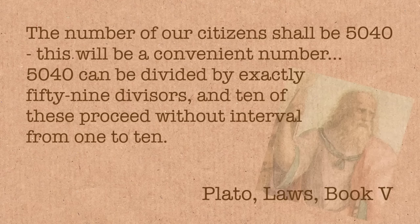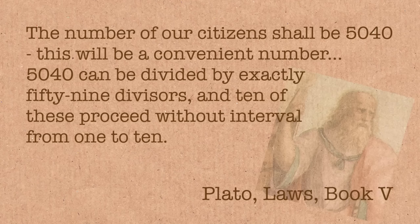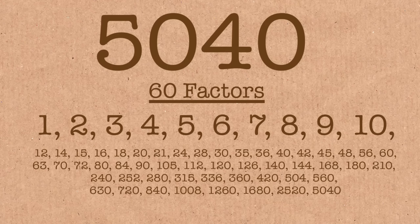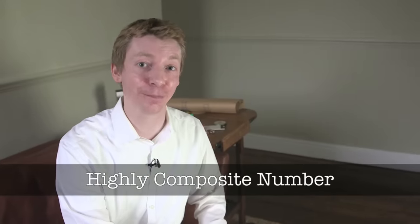So Plato was thinking this is the best number you could have for, like say, a city. If you had the population of a city was 5040, you could divide that up into all kinds of different groups. If you wanted to divide up the land, then you would divide it up into units of 5040. 5040, lots of divisors, plus it has more divisors than all the numbers less than 5040. We now call this a highly composite number.